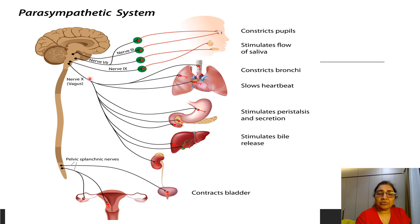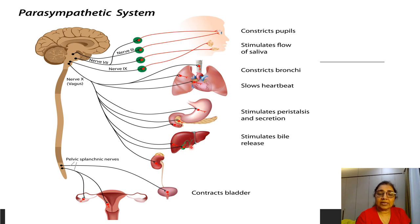The tenth nerve is the vagus nerve, which supplies the bronchus causing bronchoconstriction and increased secretion of the lung, and it inhibits or slows down the heart. It also supplies the GI tract, causing increased motility and relaxation of the sphincter, stimulates bile release, and increases digestion of the GIT. It also supplies the kidney.